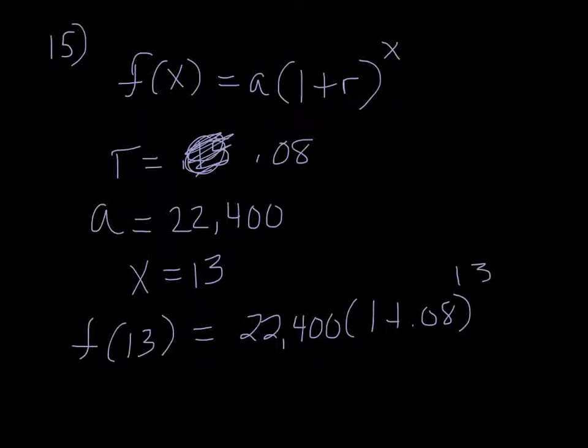So when I put this in the calculator, I'm going to do, well, 1 plus 0.08 is 1.08. I'm going to raise that to the 13th power. And I'm going to multiply that by 22,400. Okay, I guess I messed up on the recording there. So when we put it in with 1 plus 0.08, we end up getting a number higher than 22,400. So that makes us realize that we need to subtract the 0.08 instead of add. And when you do that, then you get a number smaller, the 7577.